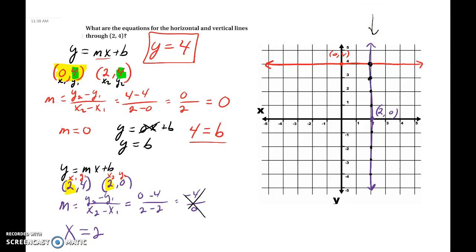Alright, those are the two different types of equations you can have for horizontal and vertical lines. That's it for section 7. One more section to go and then we're done this chapter.